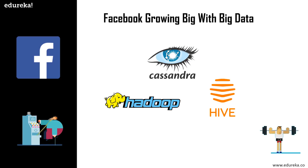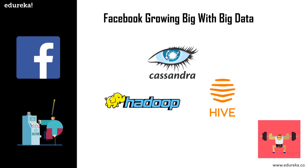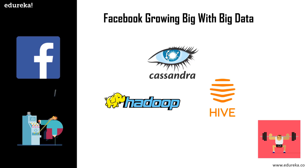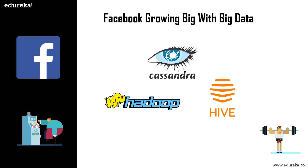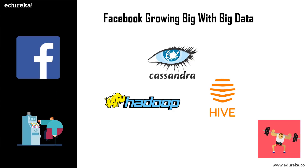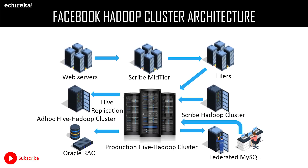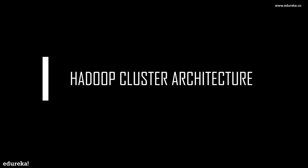Hive improved the query capability of Hadoop by using a subset of SQL and soon gained popularity in the world of unstructured data. Today, thousands of jobs are run using this system to process a range of applications quickly. Facebook is one of the biggest corporations on Earth, thanks to its 1.5 billion active users. The overview of Facebook's Hadoop cluster consists of web services, ad-hoc Hive Hadoop cluster, production Hive Hadoop cluster, and many more components.